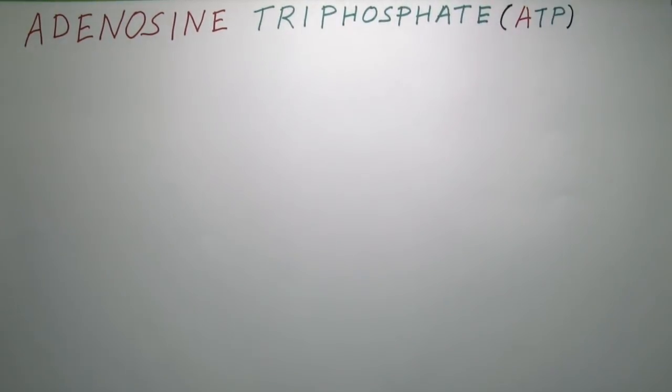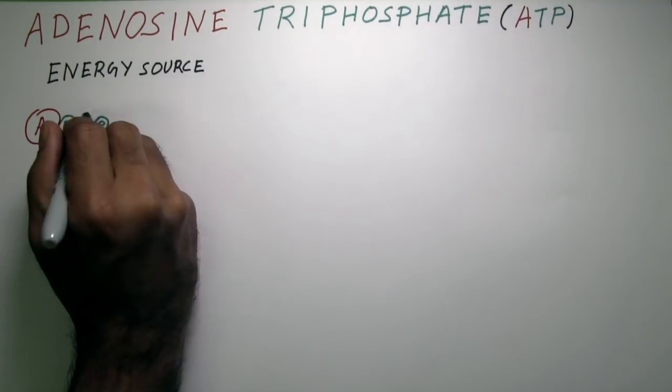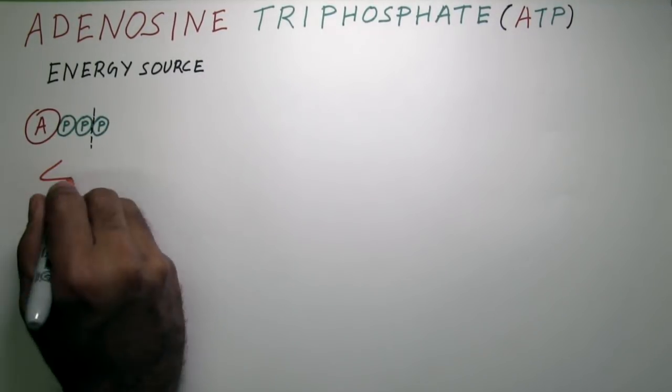Adenosine triphosphate or ATP is the energy source in living cells. Energy is generated by the splitting of one of three phosphate groups.